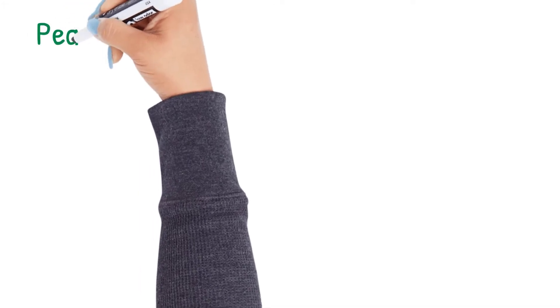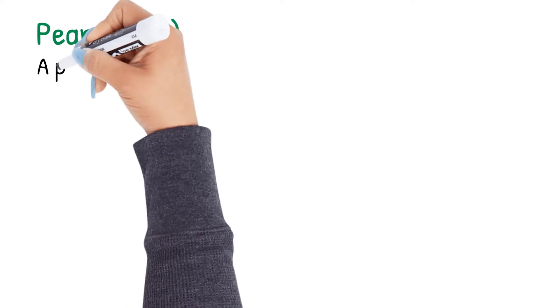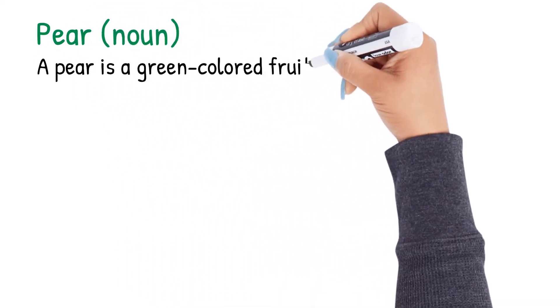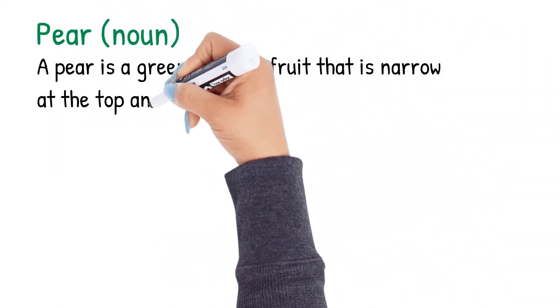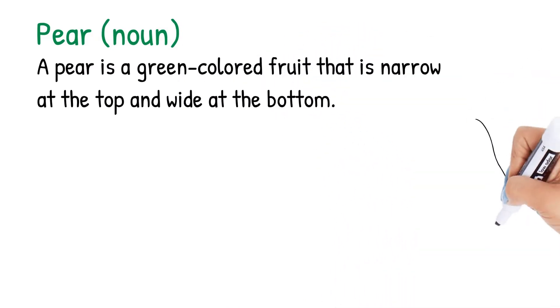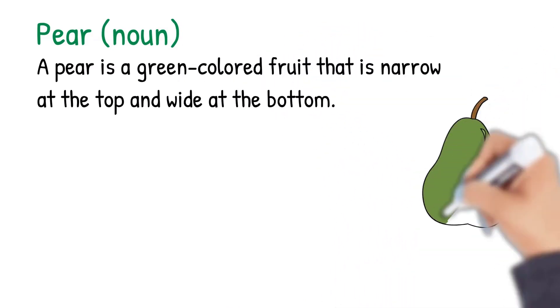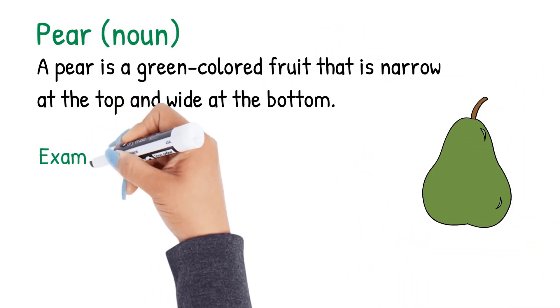Now let's review the word pear spelled P-E-A-R. Pear is a noun. A pear is a green-colored fruit that is narrow at the top and wide at the bottom. Let's look at some examples.